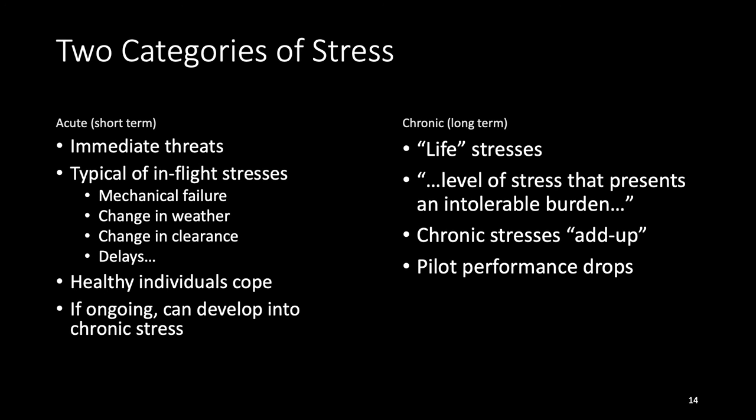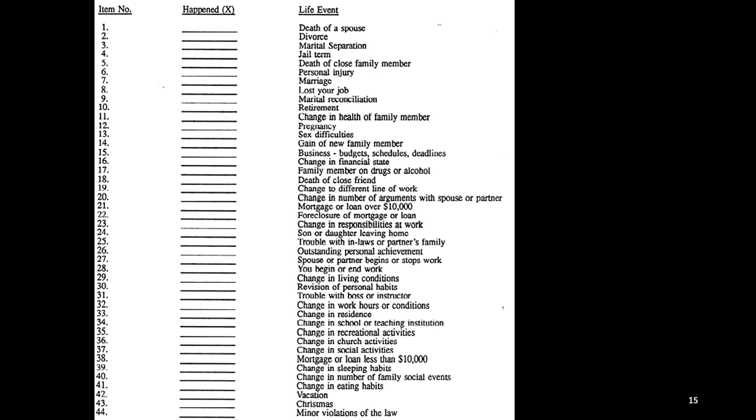An otherwise healthy individual can usually cope with acute stress. However, if you constantly expose yourself to acute stress it can become chronic. Chronic stress is the result of life stresses — levels of stress that represent some sort of intolerable burden — and they add up. When life stresses are really adding up, statistics show it has a real impact on pilot performance. We've included in the course content the Holmes-Rahe stress test. I'd like everyone to take a look at it and give themselves a score to see how high their stress score is based on the things that have happened in the past 12 months.